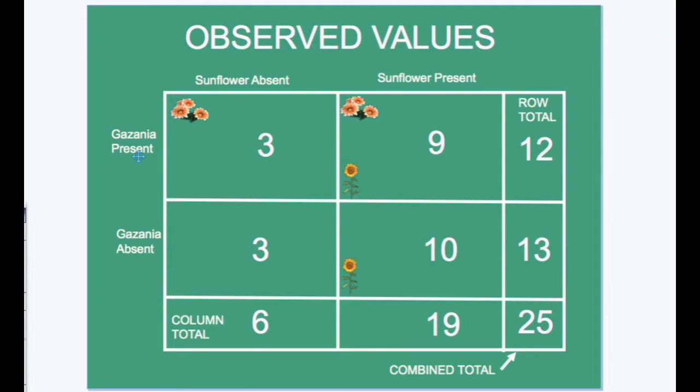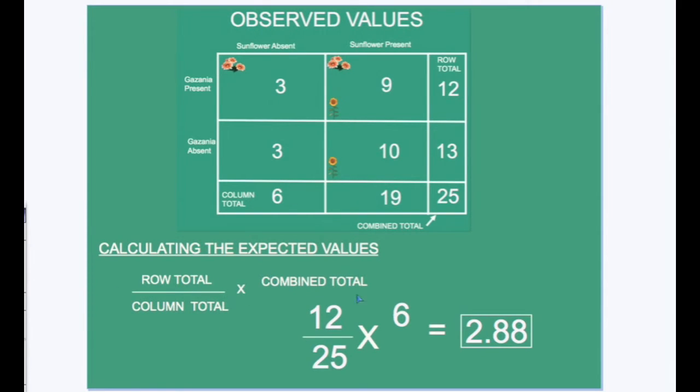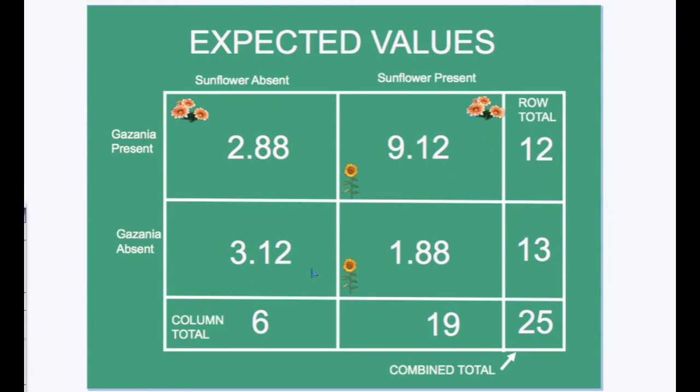In order to make a valid scientific conclusion about association, whether that association be positive or negative or lack of association, a statistical test of significance must be completed. In this case, the chi-squared test is appropriate. And the first step in completing this test is to convert observed values into expected values. To calculate the expected values, this formula is used: the row total 12 in this first case is divided by the combined total 25 and then multiplied by the column total of 6. This would come to 2.88 and it would be the expected value for this box. A similar procedure is carried out to determine each of the other three expected values. Do your own calculations and see if you agree with these three expected values.